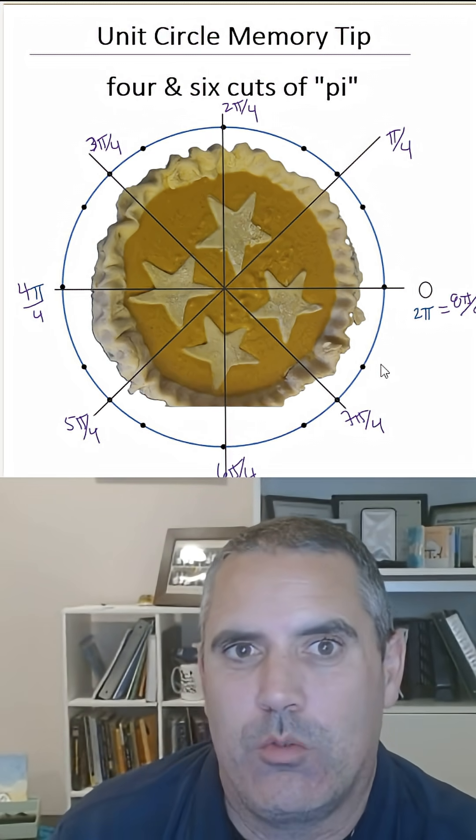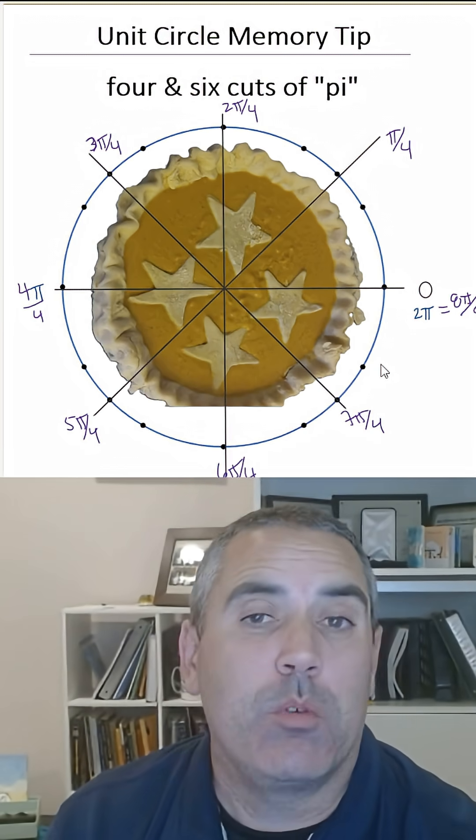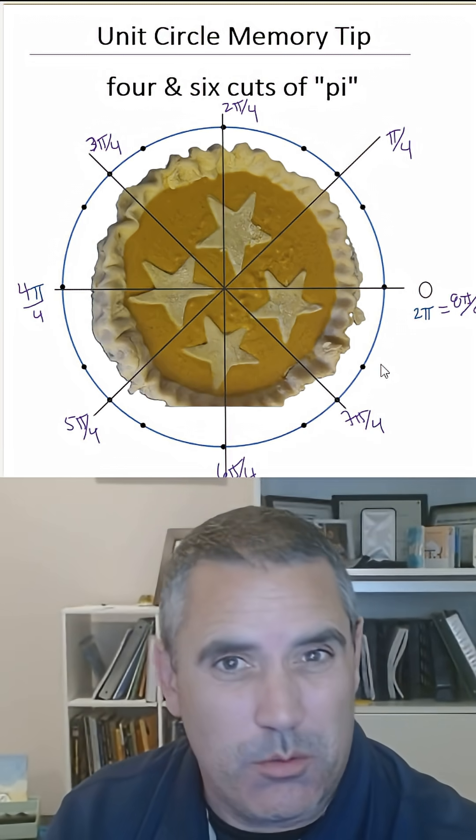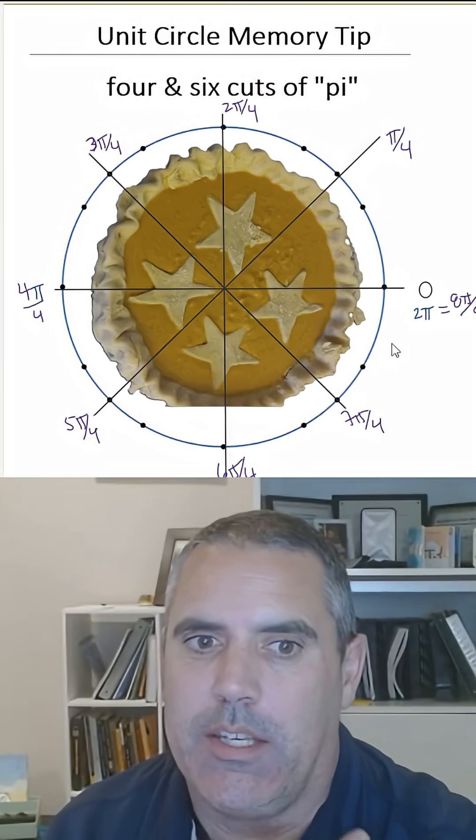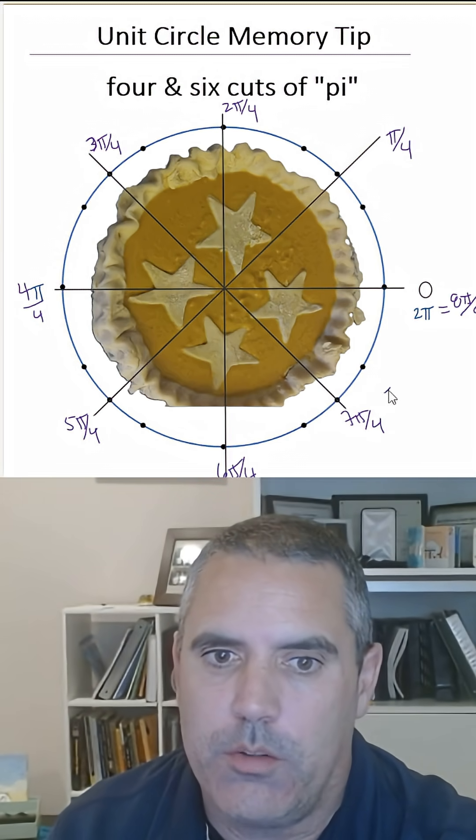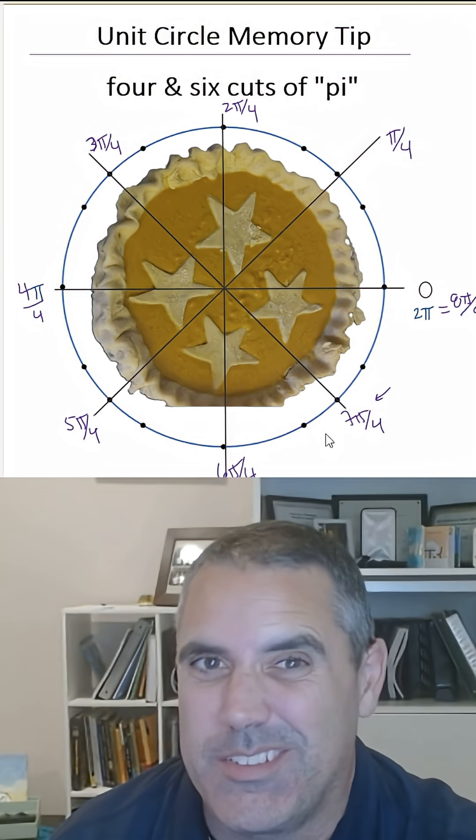But it's the same thing that happens when you use a ruler. I grew up helping my dad on construction sites, doing measurements, and we wouldn't say 6 eighths. We knew it was 6 eighths, but we would say 3 fourths. That's the same thing I think that's happening to students here if they're forgetting. That's why I can know that this is 7π/4 because it comes before 8π/4. It's like reading a ruler.